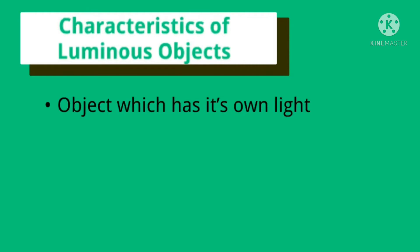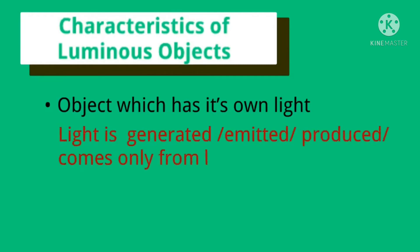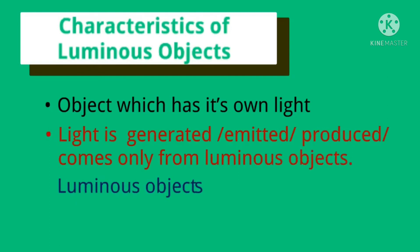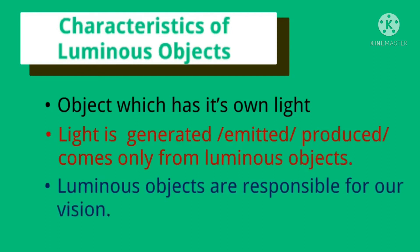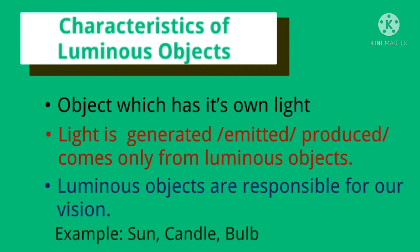Now, characteristics of luminous objects: objects which have their own light. Light is generated, emitted, and produced — it comes only from luminous objects. Luminous objects are responsible for our vision. Examples we have already discussed: sun, candle, bulb, firefly, etc.